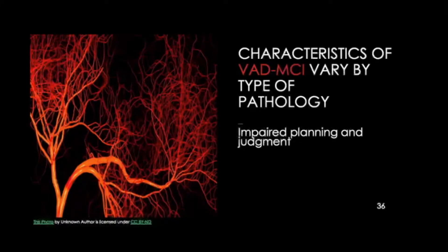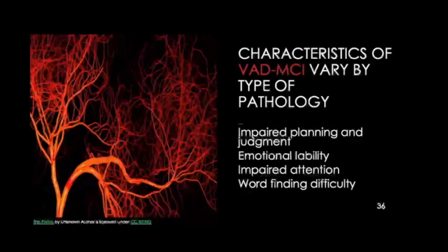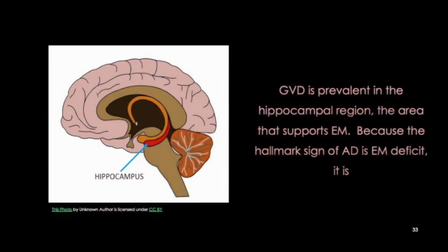Now let's talk about the characteristics of vascular MCI. As you might guess, they vary by type of pathology. However, when you look at the whole body of literature about vascular disease and vascular MCI, a few characteristics keep coming up: impaired planning and judgment, emotional lability, impaired attention, word-finding difficulties, and a mild aphasia. And because the hallmark sign of Alzheimer's disease is episodic memory deficit, it is essential to test episodic memory — a very good way to do that is with a story retelling test that has an immediate and delayed condition.